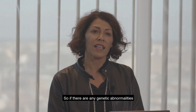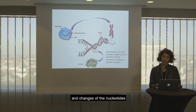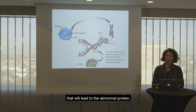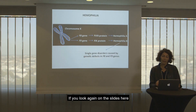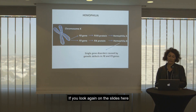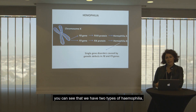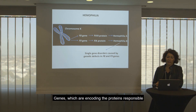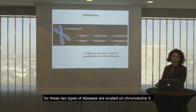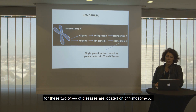If there are any genetic abnormality and change of the nucleotides, that will lead to abnormal protein. Looking at the slides, you can see that we have two types of hemophilia, hemophilia A and hemophilia B. The genes encoding the proteins responsible for these two types of diseases are located on chromosome X.